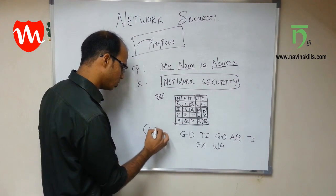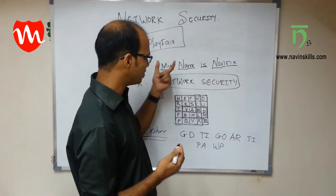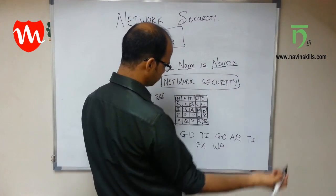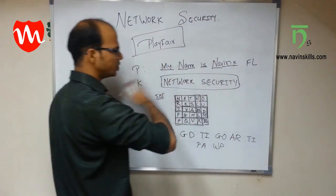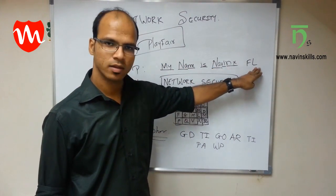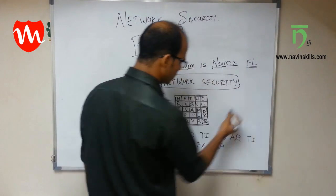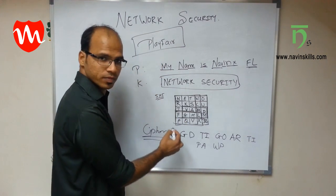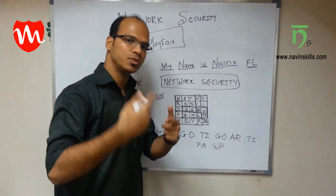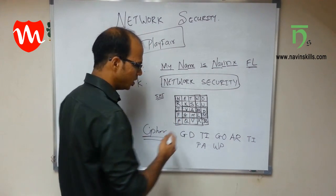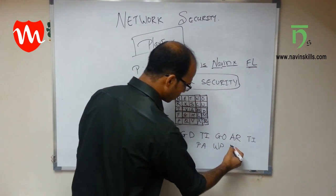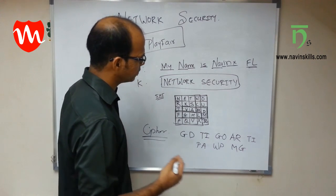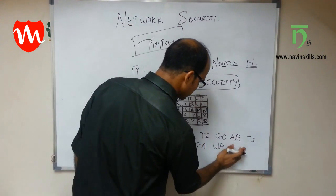So that is your plain text converted to cipher text — it's that simple. But what if both letters fall in the same row? For example, F and L are in the same row, so you cannot create a box. In that case, since there is no diagonally opposite character, you go with the next character in the row. For L you go to M and for F you go to G, so F-L becomes G-M.